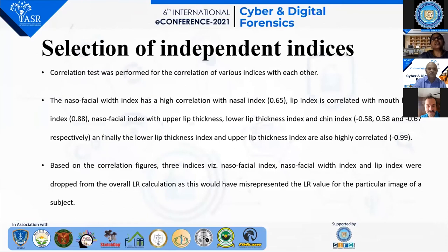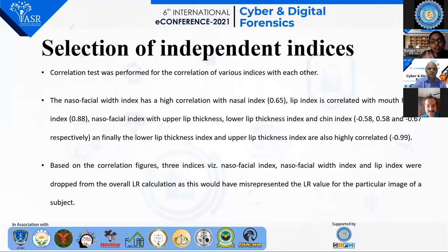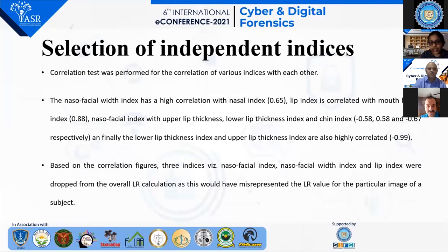For the selection of independent indices, a correlation test was performed. We have 11 facial indices, and we determined which facial indices are most reliable. The nasal facial width index has high correlation with the nasal index, and the lip index is correlated with the mouth height index. The nasal facial index, nasal facial thickness index, chin index, and lower lip thickness index are also highly correlated. Therefore, three indices — nasal facial index, nasal facial width index, and lip index — were dropped, as they would misrepresent the LR value of a particular subject's image.